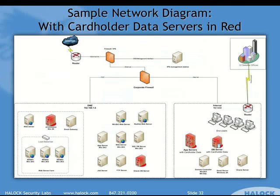A couple of quick samples here on the network segmentation, if that wasn't clear there. Here we have a sample diagram, just a typical environment. The servers highlighted in red down along the bottom indicate those systems that are, in this case, handling credit card data directly — storing it, transmitting it, et cetera. So you have some application servers, some database servers, et cetera. Those are the ones touching card data.